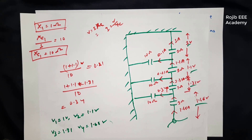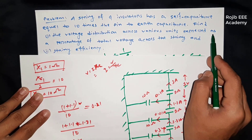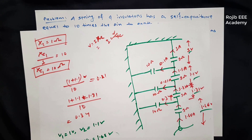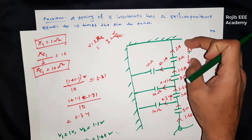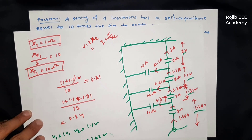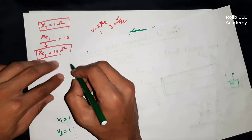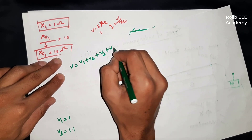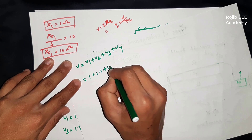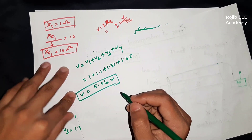Now we calculate the total voltage and the percentage distribution across the various insulator units. The total voltage V equals V1 plus V2 plus V3 plus V4 equals 1 plus 1.1 plus 1.31 plus 1.65, which equals 5.06 volts. Now we perform the percentage calculation.